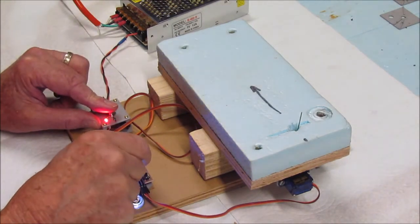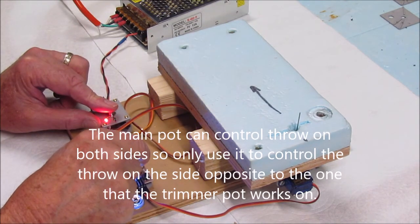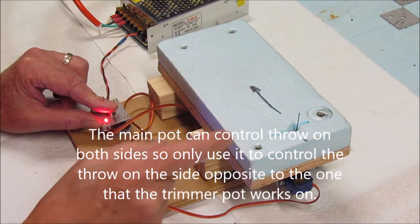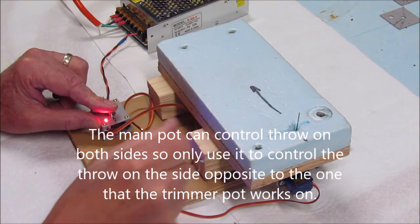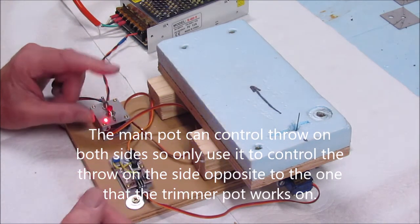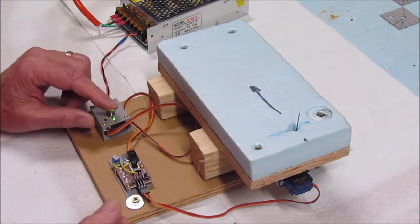I'll know that my main pot is it. So what I'll do is before installing on the layout, I'll adjust my throw so it's very minimum so I don't overpower the points.